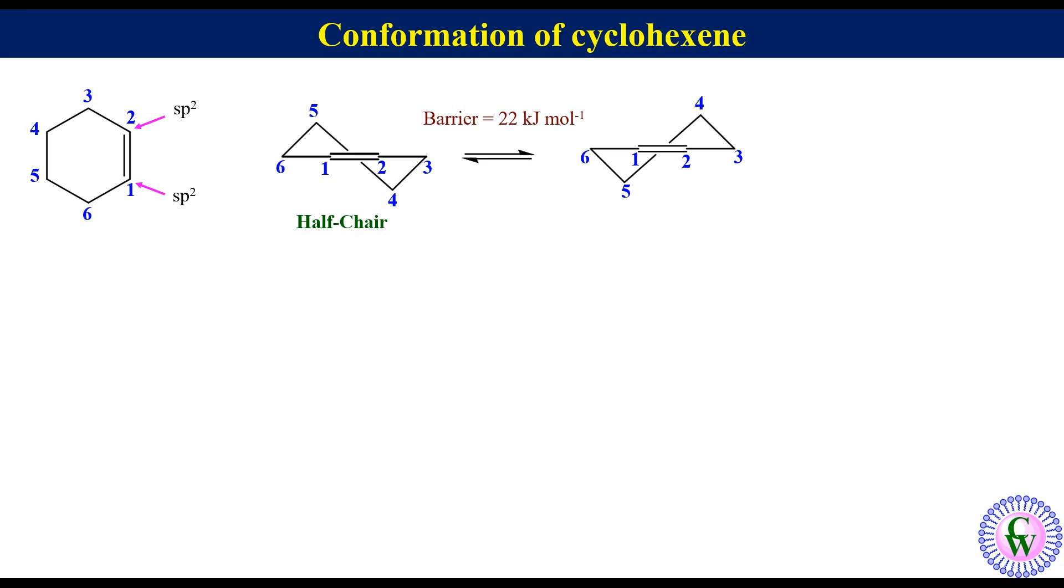This is half of the energy barrier for the ring flipping of cyclohexane. In cyclohexene, the hydrogen atoms on the saturated carbons adopt two types of orientations.